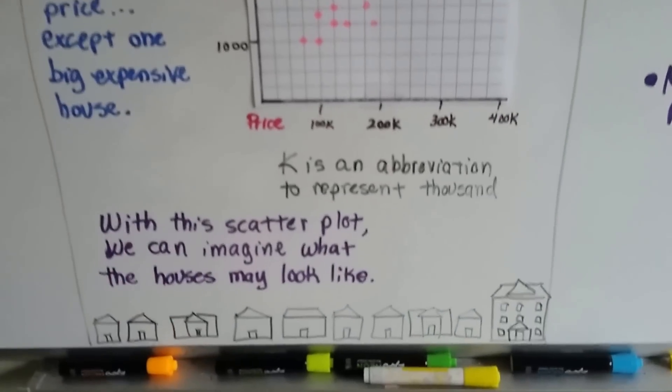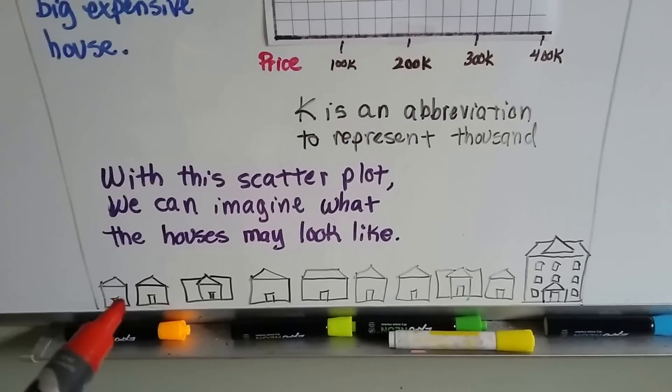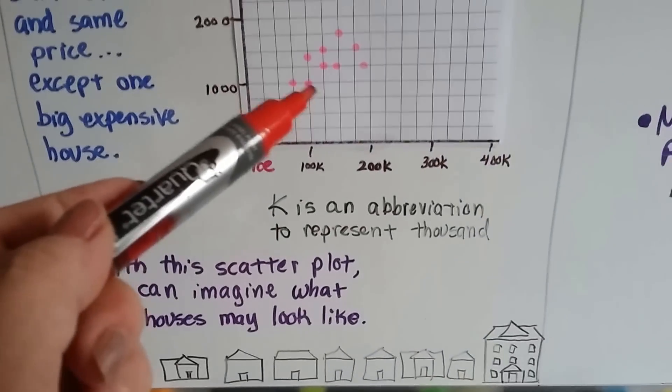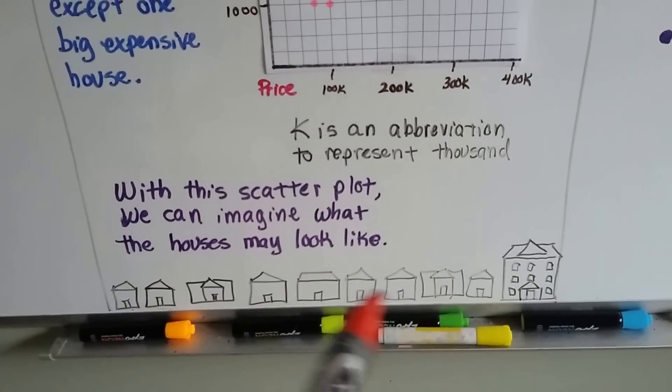And with this scatter plot, we can imagine what the houses might look like on that city block. So you've got 1, 2, 3, 4, 5, 6, 7, 8, 9 houses that are pretty close to the same size.